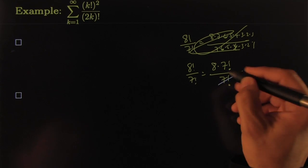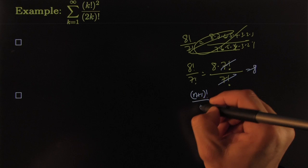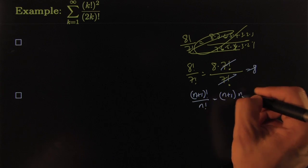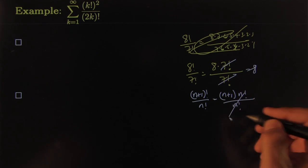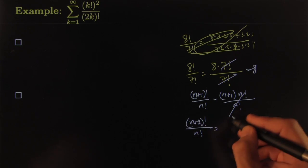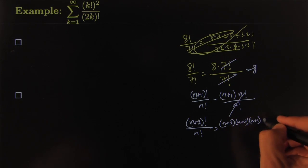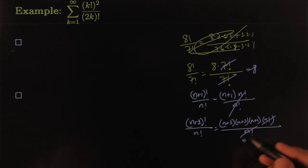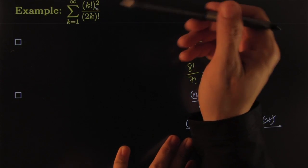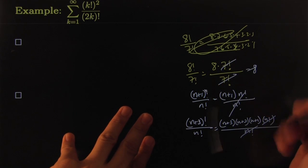Writing it this way makes it easy to simplify — that's just equal to 8. So it's often very easy to simplify (n+1)! over n!: you just write (n+1) times n times all the numbers after n. Even something like (n+3)! over n! — that means you start with (n+3), then (n+2), then (n+1), and everything after cancels. That's why when you have factorials, you might want to try the ratio test — not guaranteed to work, but often very helpful.